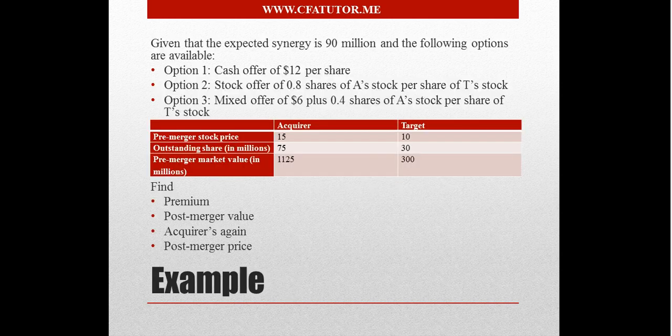If you look at the example here, in order to use it for the Excel sheet, we'll see that given an expected synergy of $90 million and the following options are available. Just to mention here, there are more than one option that an acquirer can have in order to acquire another company. This includes a mix between either a cash offer or a stock offer, or something that falls in between, having what's called a mixed offer, offering some cash and then some stock for the remaining that wasn't offered by cash.